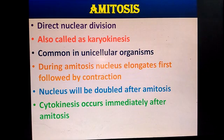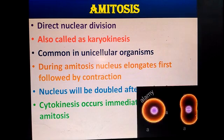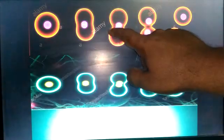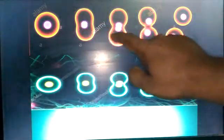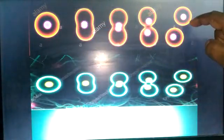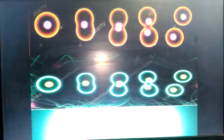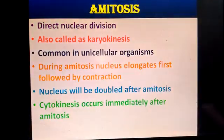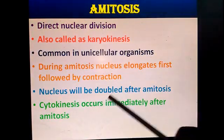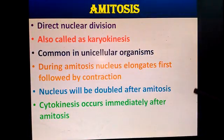During amitosis, the nucleus elongates first, followed by contraction. Then the nucleus will be doubled after amitosis.